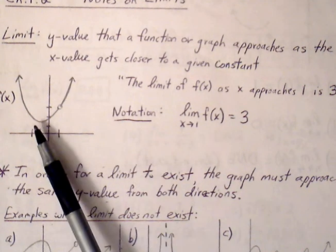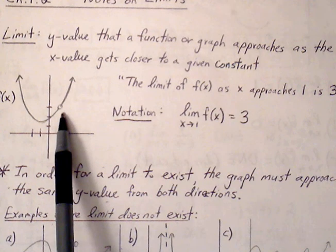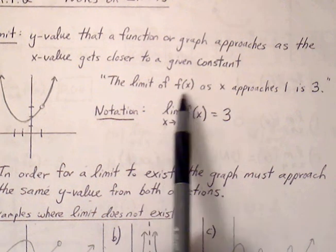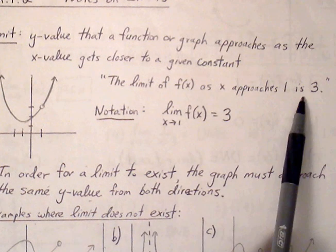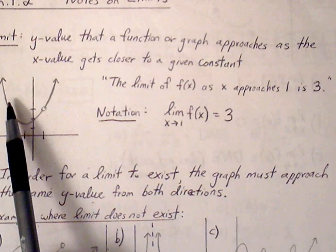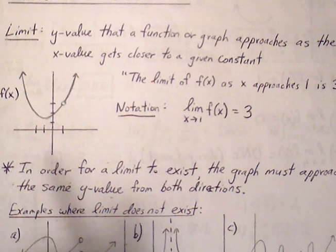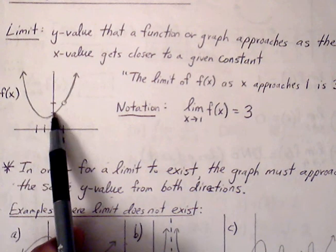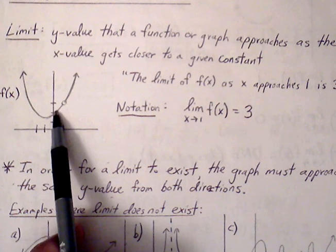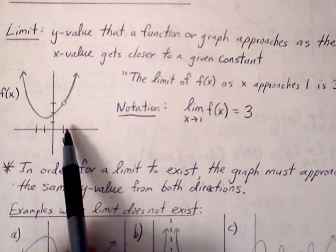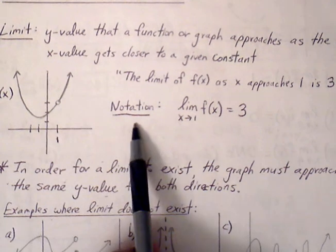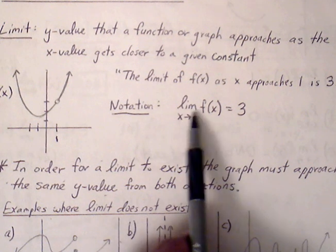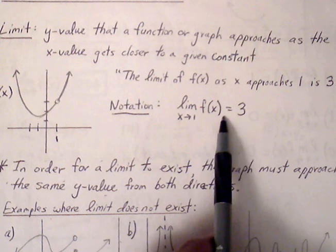For instance, in this graph, even though there's a hole at that point, we can say that the limit of f as x approaches 1 is 3. The reason why is because as the graph gets closer towards the x-value of 1, the y-value is approaching 3 from both sides of the graph. The notation we use to express this is: limit of f as x approaches 1 is equal to 3.